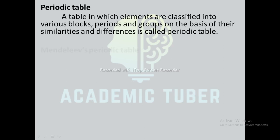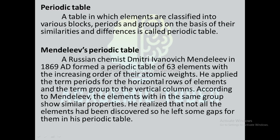Mendeleev's periodic table: a Russian chemist, Dmitri Ivanovich Mendeleev, in 1869 AD formed a periodic table of 63 elements with the increasing order of their atomic weights. He applied the term 'period' for the horizontal rows of elements and the term 'groups' for the vertical columns. According to Mendeleev, the elements within the same group show similar properties.